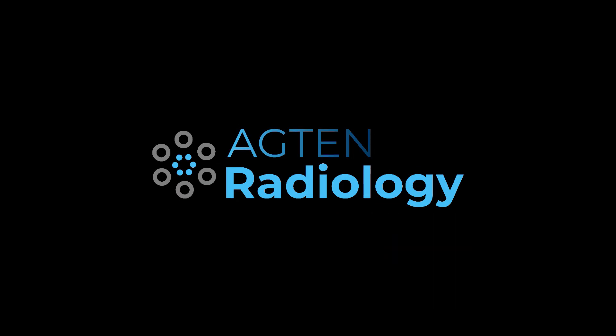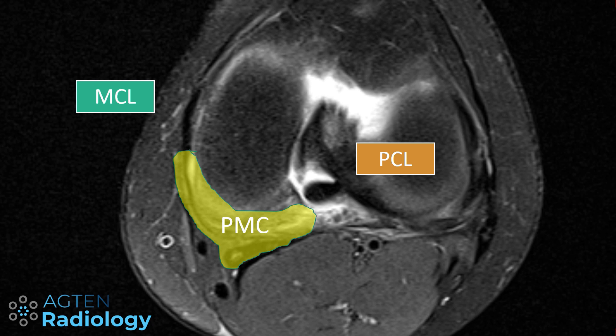In today's video, I show you the MR anatomy of the posterior medial corner on MRI. The posterior medial corner of the knee is located between the MCL and the PCL. To be more specific, everything behind the posterior border of the MCL and the medial border of the PCL. Everything in between here, including the semimembranosus tendon, is considered to be part of the posterior medial corner.